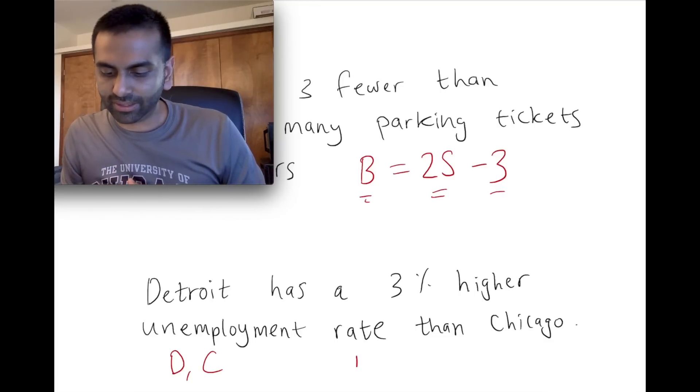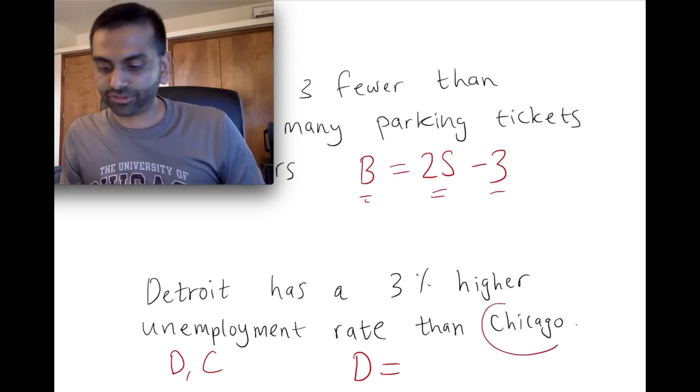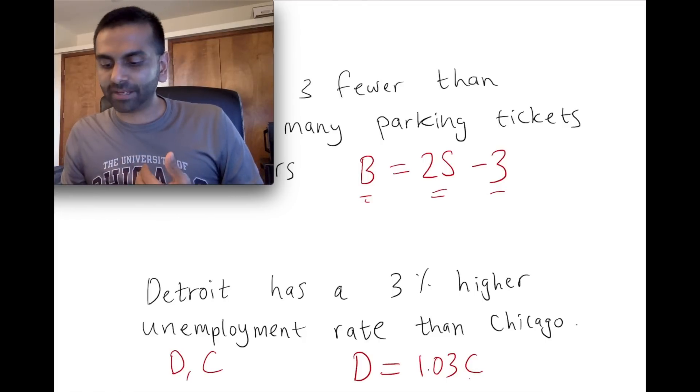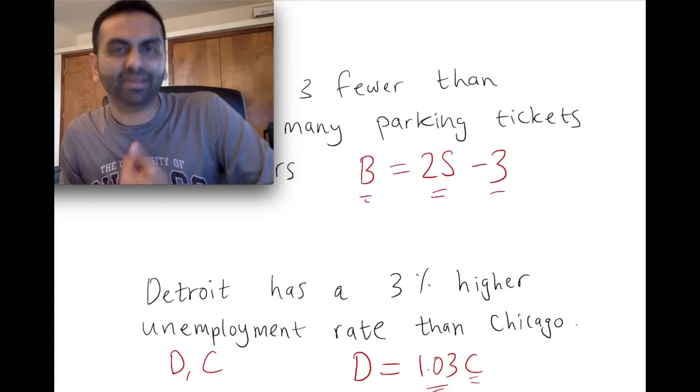sign. So Detroit, d equals—Detroit is not equal to Chicago, but three percent higher than Chicago, meaning 1.03 times c. Notice you're multiplying Chicago by a number a little bit bigger than one, so it's going to make the number a little bit higher.